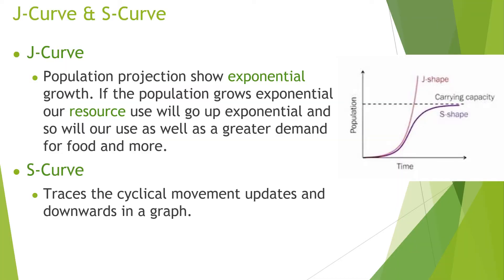J curves versus S curves: a J curve on a graph shows exponential growth, which is really what we've looked like since the Industrial Revolution. What demographers are hoping happens by the end of this century is an S curve, leveling out at around 11 billion, which creates this S curve you see over on the right.